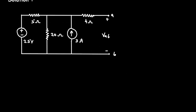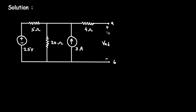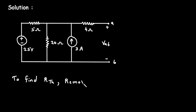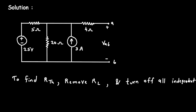Solution. Here the value of load resistor RL is absent. So we have to find the value of RTH. Step number 1 is to find RTH. To find RTH, what we do generally is we remove the RL. Now here the RL or load resistor is already absent, so remove RL and turn off all independent sources.